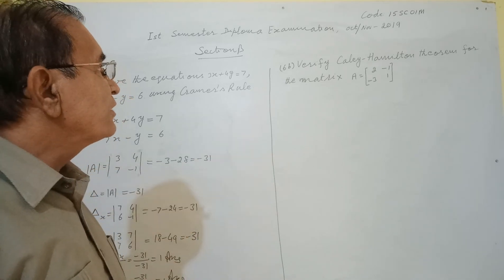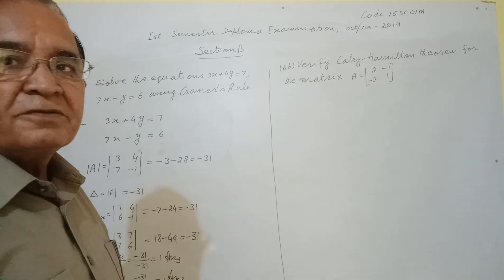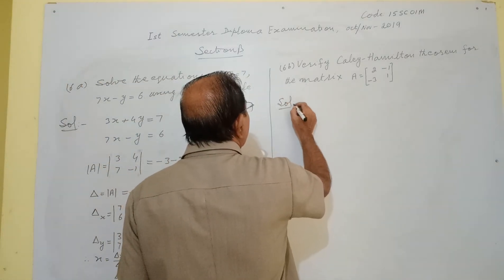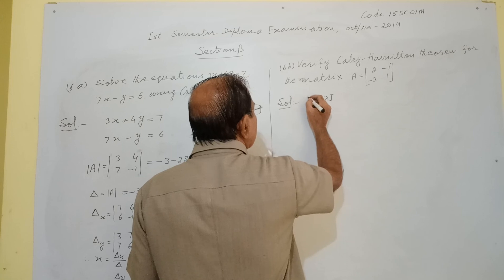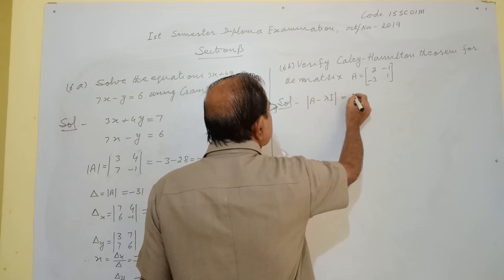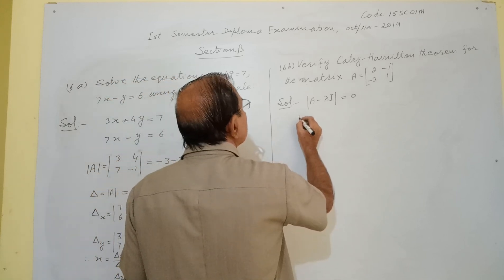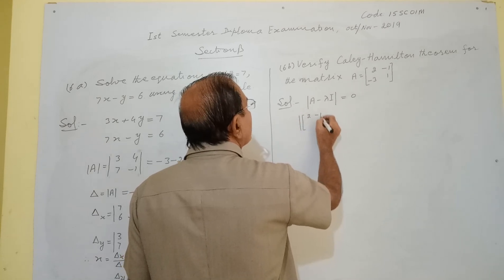Next: verify the Cayley-Hamilton theorem for the matrix A = [[2, -1], [-1, 3]] (or similar 2×2 matrix as given). The Cayley-Hamilton theorem states that every matrix satisfies its own characteristic equation, i.e., det(A - λI) = 0.